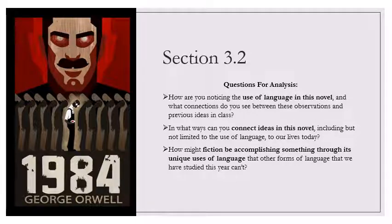He had ceased to notice whether he was crying out or not. The pain lessened again. He opened his eyes. O'Brien had drawn back the lever. How many fingers, Winston? Four. I suppose there are four. I would see five if I could. I am trying to see five. Which do you wish? To persuade me that you see five or really to see them? Really to see them? Again, said O'Brien.